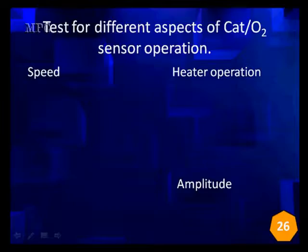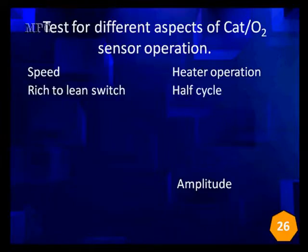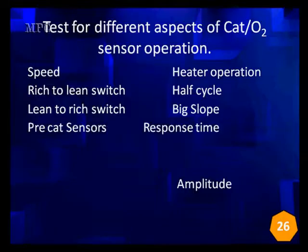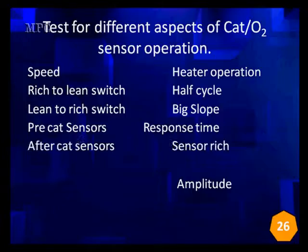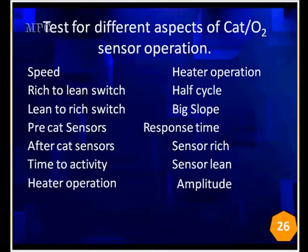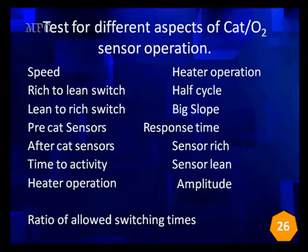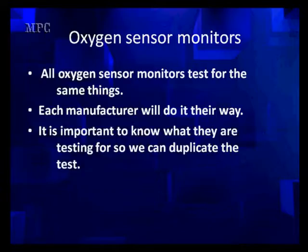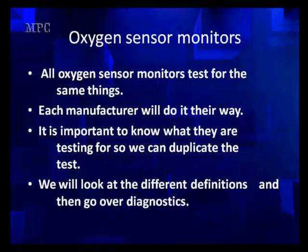What are we going to be looking for when we're looking at speed and heater operation? We're going to look at time, rich to lean switch times, half cycles in some manufacturers, lean to rich and big slope in some manufacturers, pre-cat heaters, pre-cat sensors and response time, after-cat sensors and response time. Also: sensor stuck rich, time to activity, sensor stuck lean, heater operation and the amplitudes, and a ratio of allowed switching times. All O2 sensor monitors test for the same thing, even though each manufacturer has their own way of doing it. It's important to know what they're testing so we can duplicate their tests.